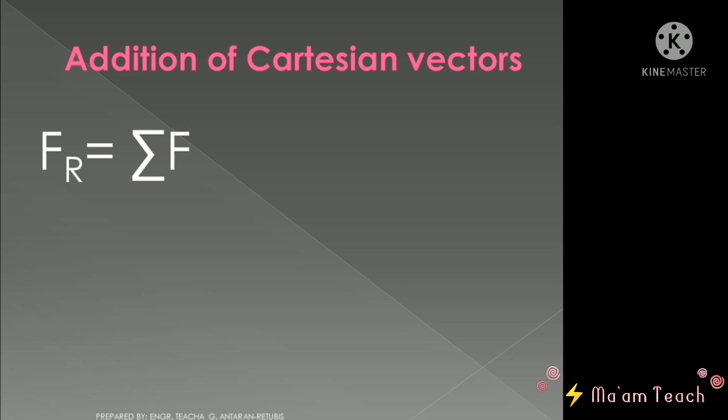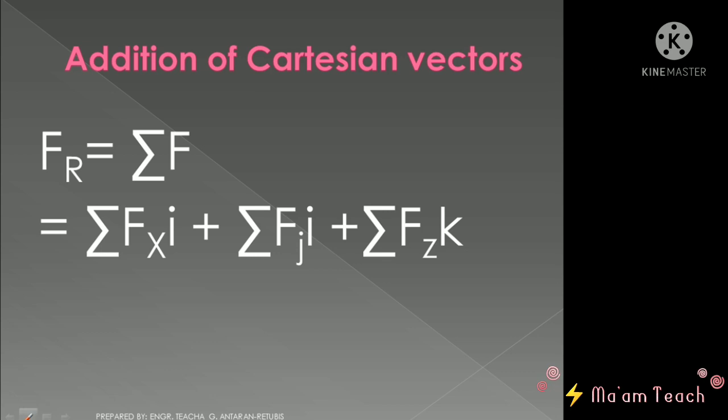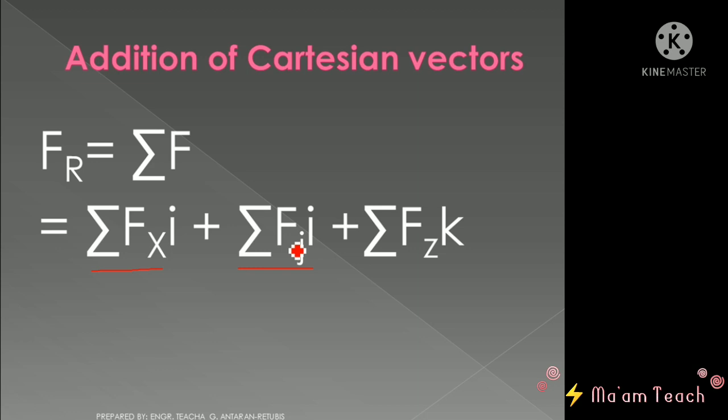So generally, the resultant is simply the summation of all the forces, which means that you have to sum all the x components. If you are trying to sum up, let's say five force vectors, just get the sum of their x component, and then y component.